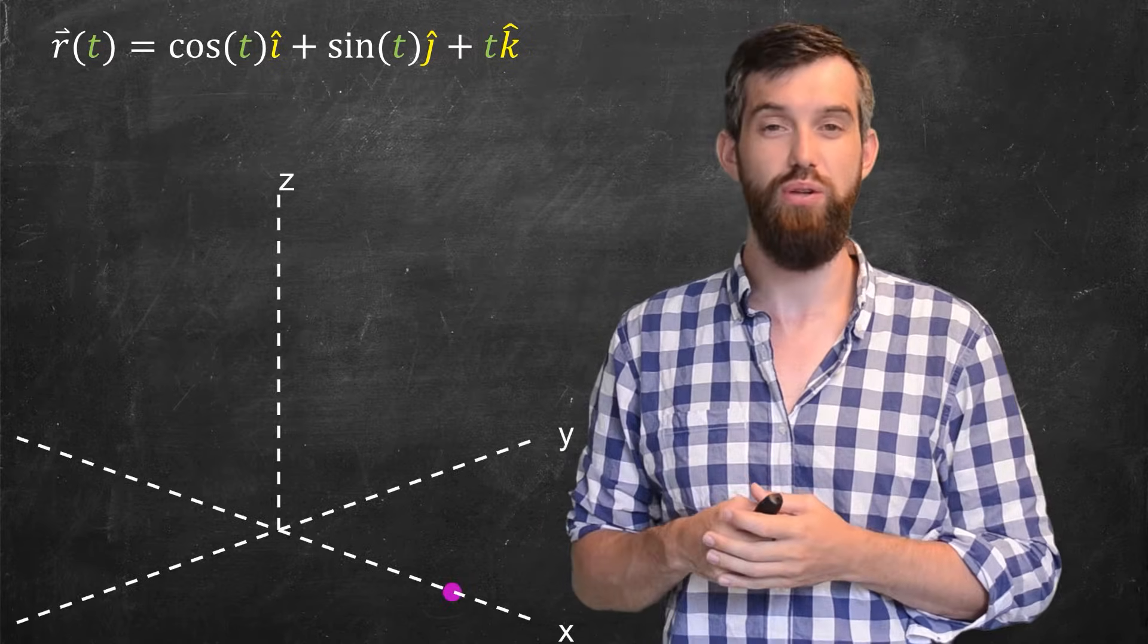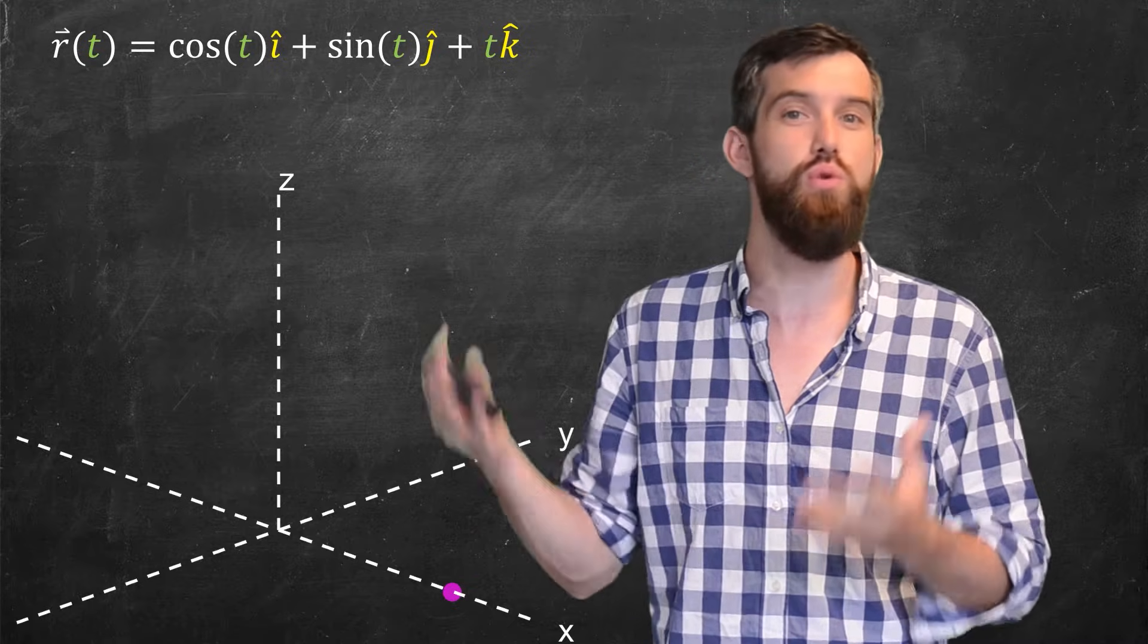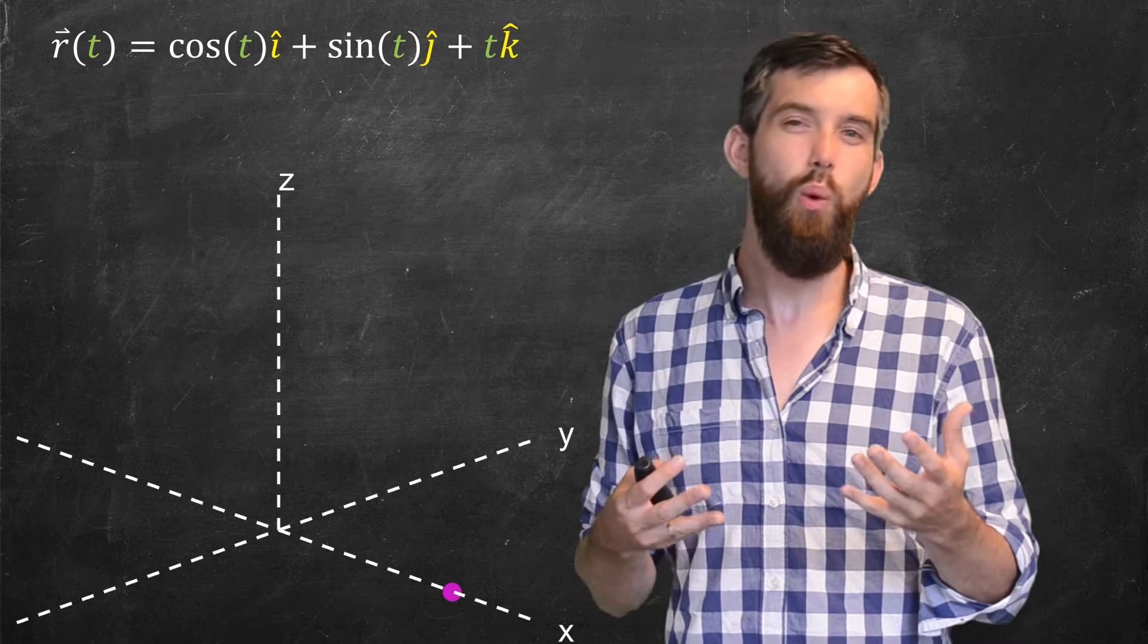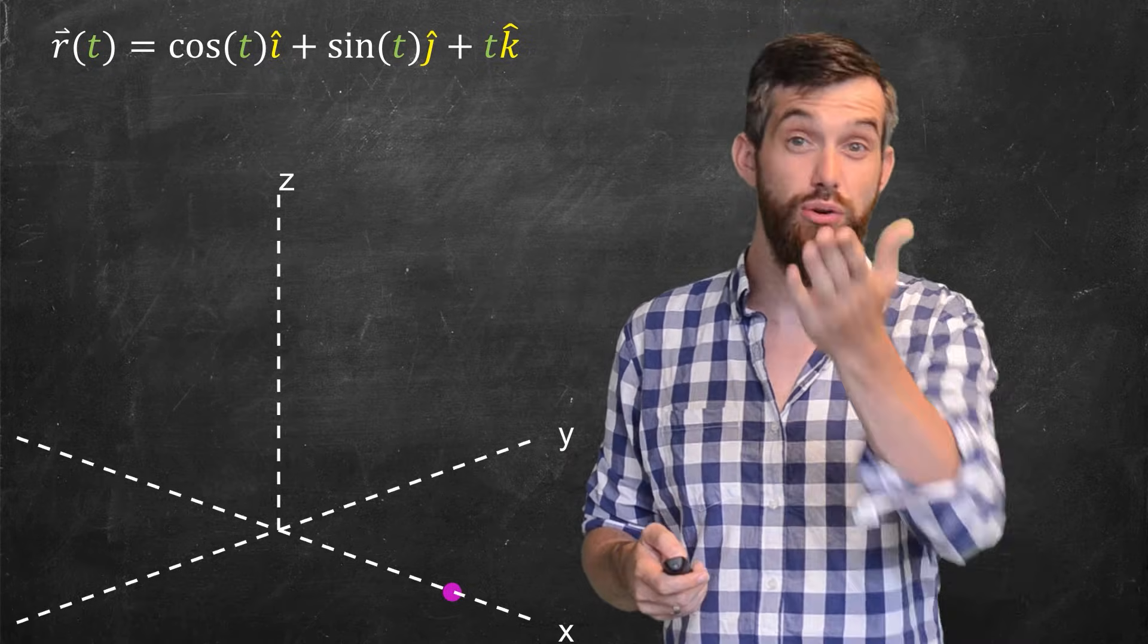If I put up a three-dimensional plot here, my x, y, z coordinate system, notice that I put on a pink dot. And what I mean this referred to is, what happens if I put in t equal to zero into this equation?